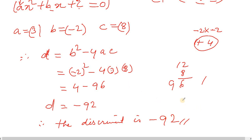So the discriminant is minus 92. These are the solutions to the three questions from this SSLC Mathematics Emboss paper. Please watch the next video for more questions.